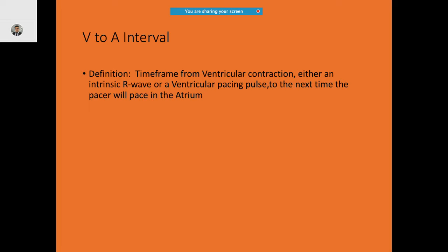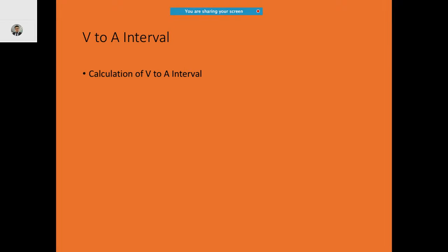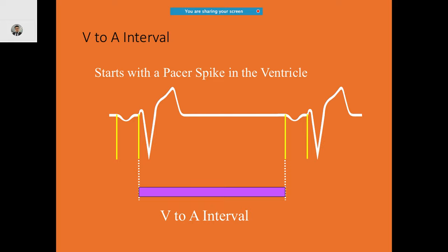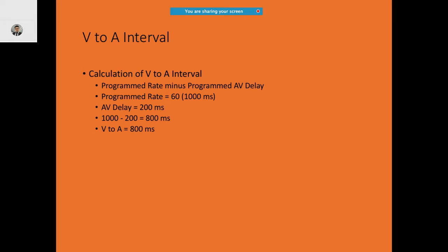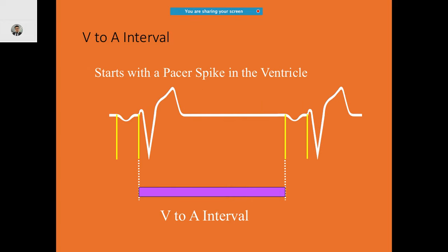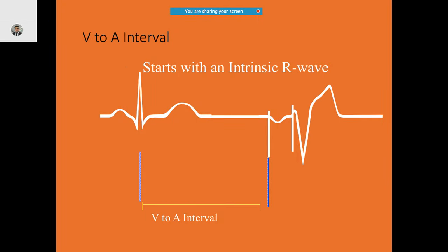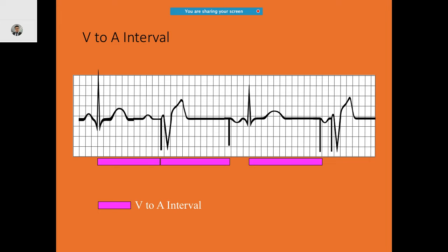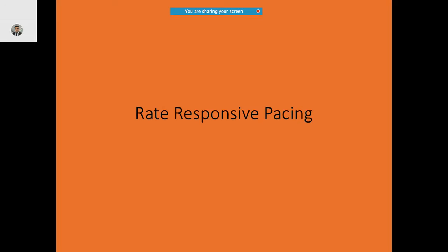The VA interval is the time frame from the ventricular contraction — either an intrinsic R wave or a ventricular pacing pulse — to the next time the pacer will pace in the atrium. The calculation is: programmed rate minus the programmed AV delay. The VA interval starts from the V spike to the A spike, whether there is intrinsic or paced activity.